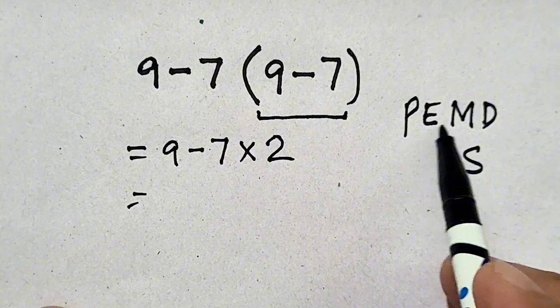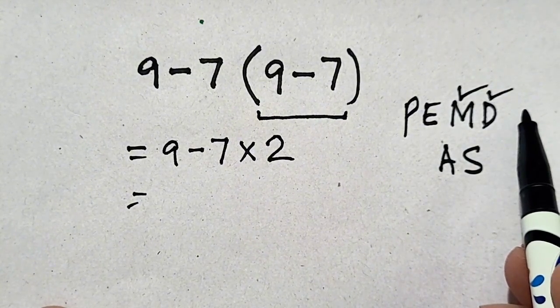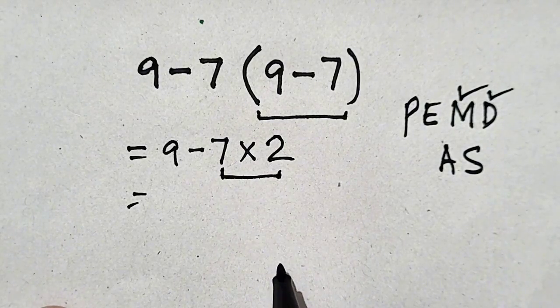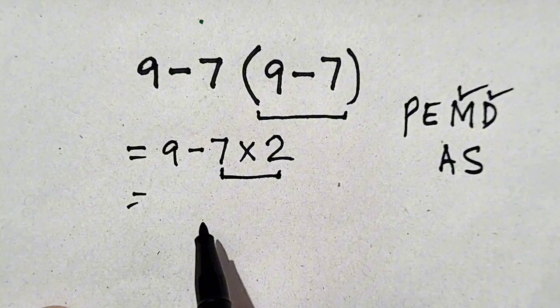Now, according to PEMDAS rule, multiplication and division will be conducted. So, seven times two, which will be equal to fourteen.